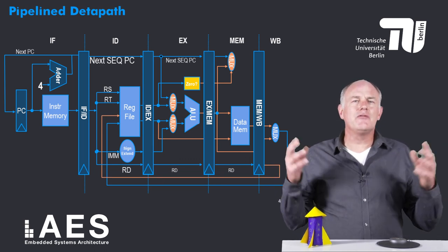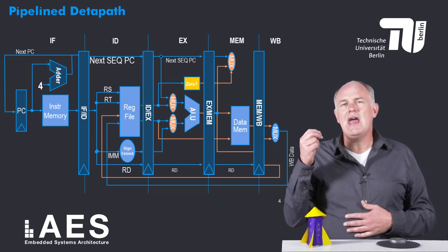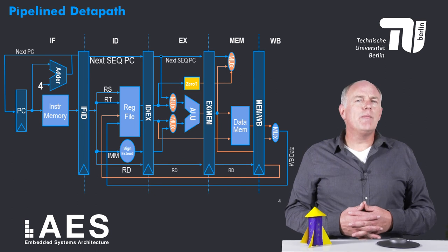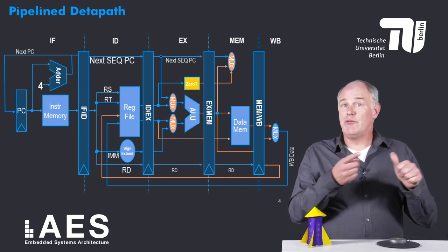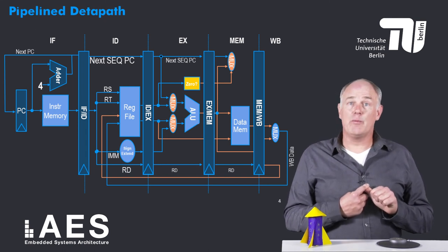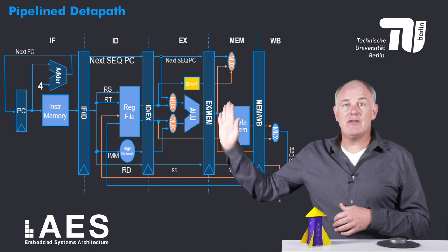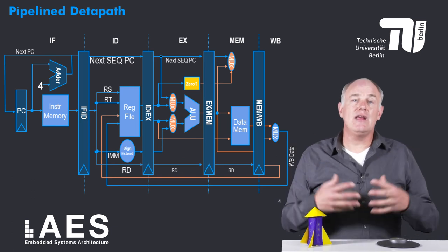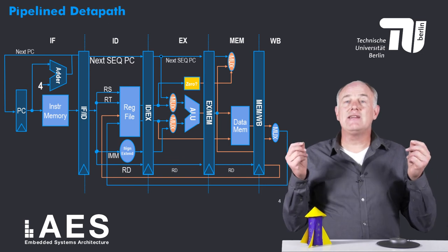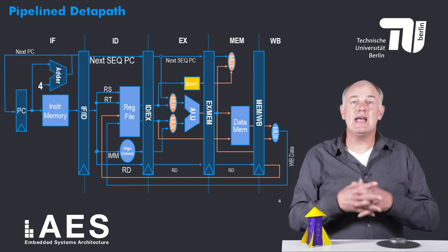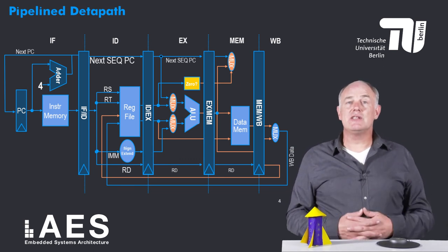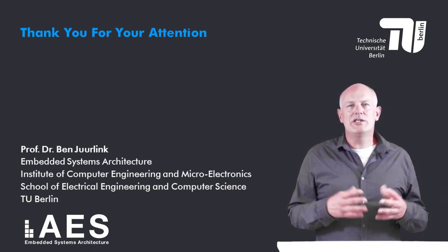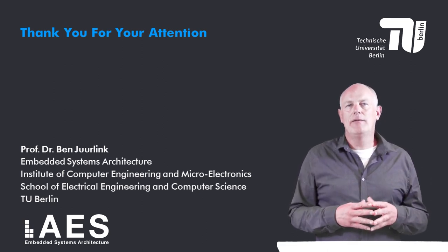I understand that this is a lot of detailed information, and I don't expect you to understand every detail immediately, especially if this is the first time you see such a block diagram. The most important points to take home are: first, we can split the data path into stages by inserting pipeline registers between the stages. Second, the register file is read in the second stage and written in the fifth stage. Third, branches actually take place in the MEM stage, the fourth stage, and at that time three sequential instructions have already been fetched. This completes this lesson. In the next lesson I will describe some features of the canonical pipeline and explain what pipeline hazards are. Stay tuned.